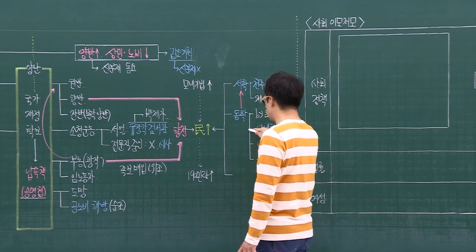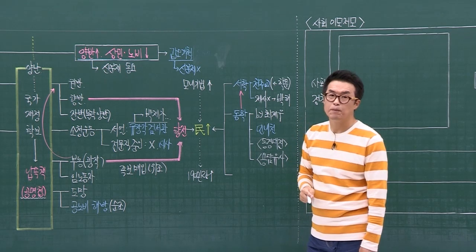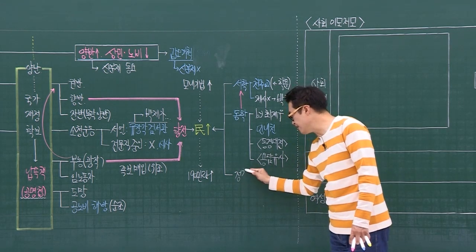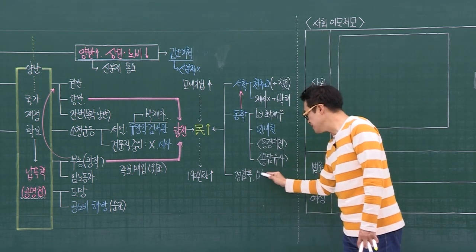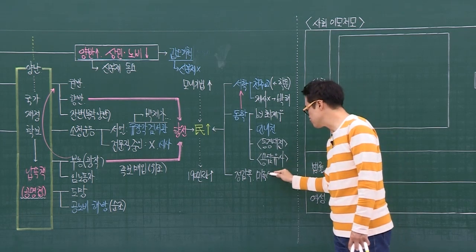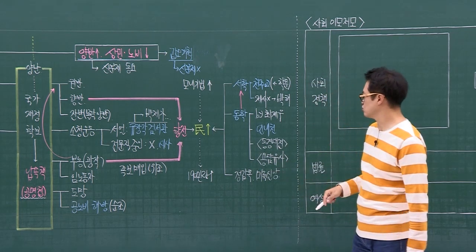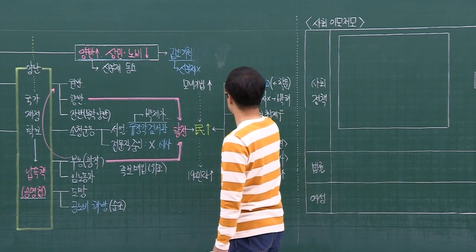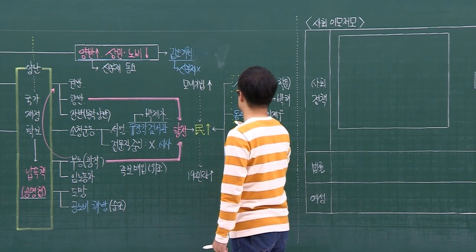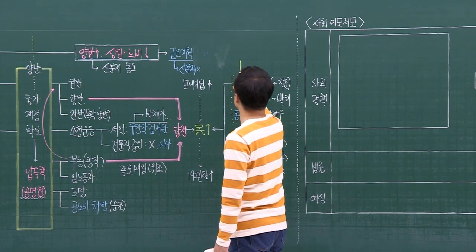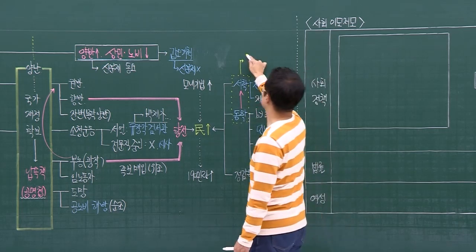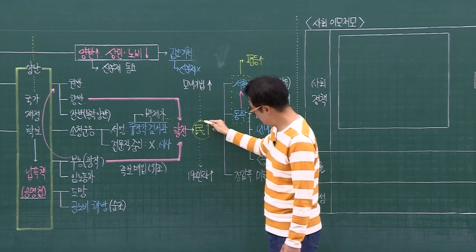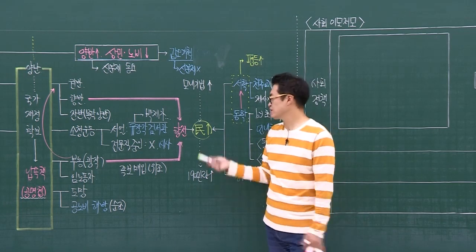천주교도 그렇고 동학도 그렇고 공통점이 있어요. 신 앞에 모두가 평등하다는 거예요. 사람이 곧 하늘이라는 거예요. 누구나 다 하늘이야, 다 똑같다는 얘기에요. 바로 평등을 이야기해주고 있더라는 것이죠. 이런 것들이 확산되면서 나중에 19세기 후반에는 동학 농민운동이 벌어지게 된 계기가 바로 이런 데서 나온다는 얘기예요. 또 정감록이라든지 미륵신앙도 유행했습니다.